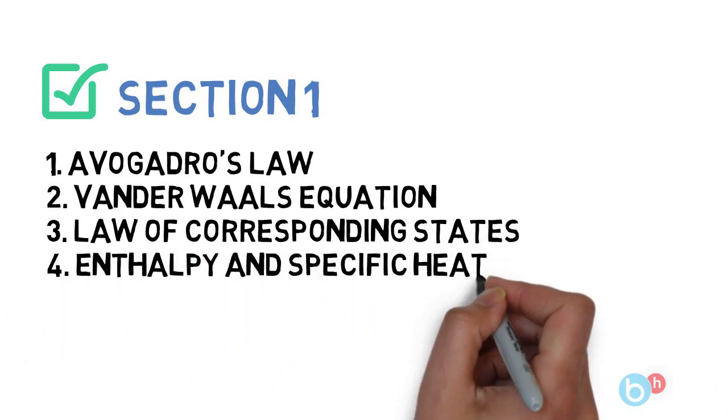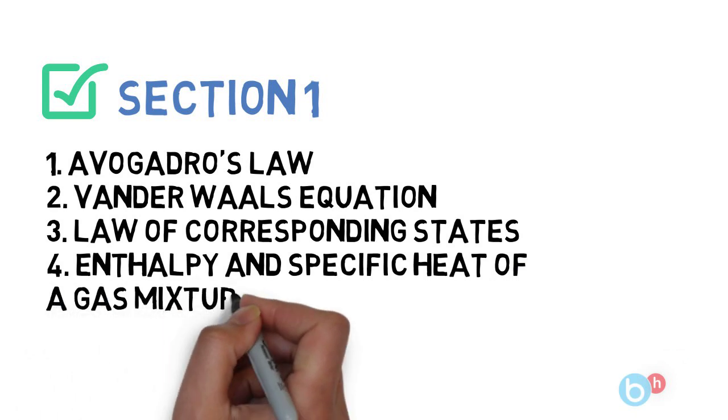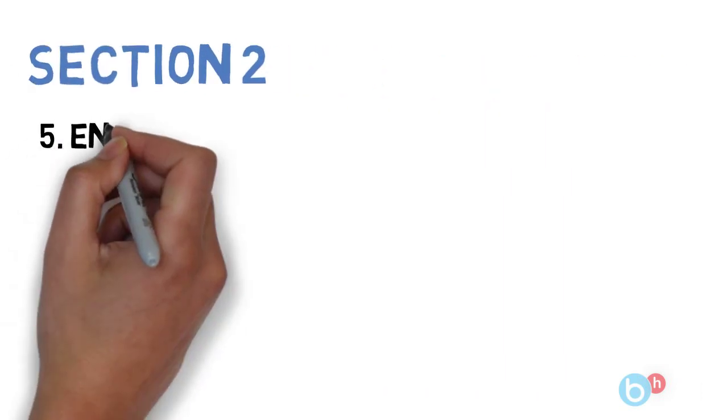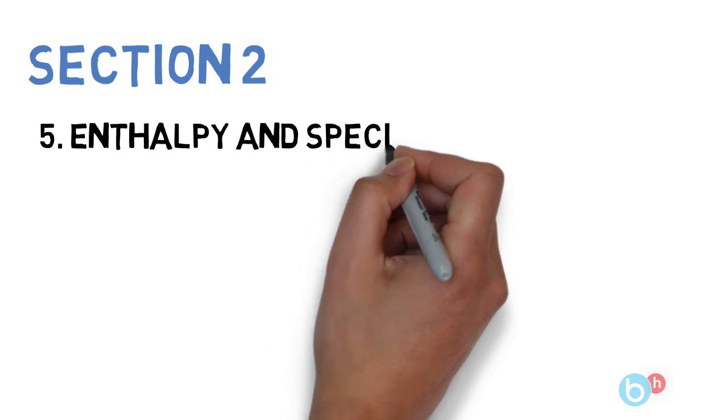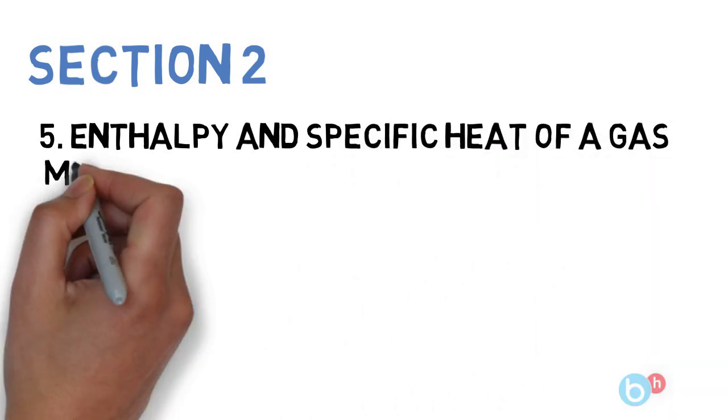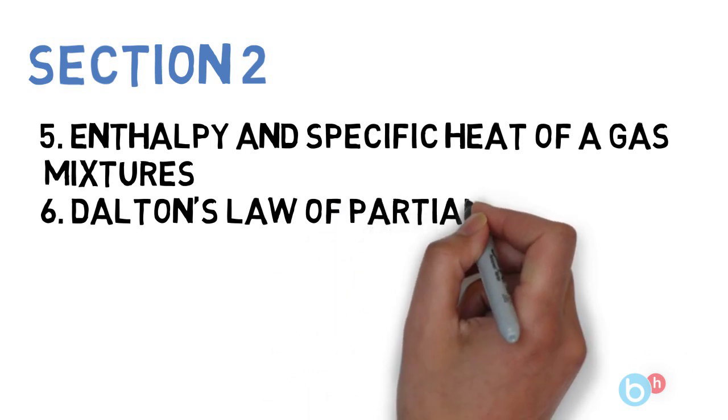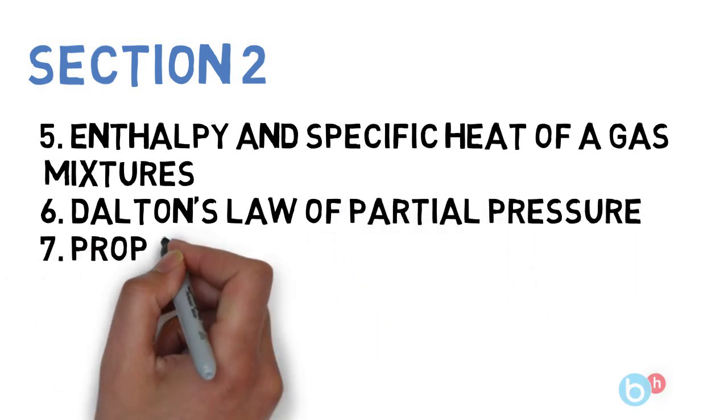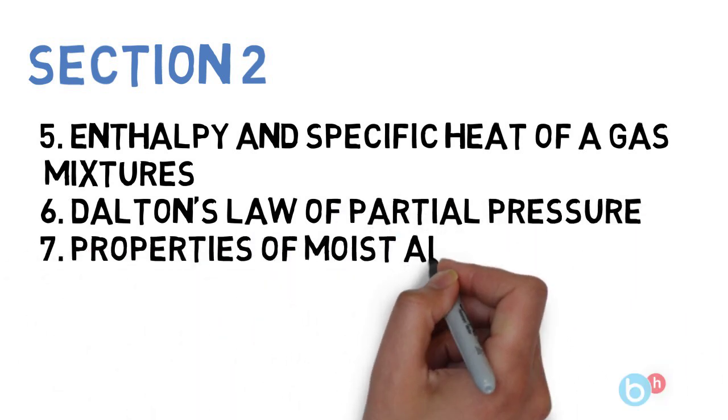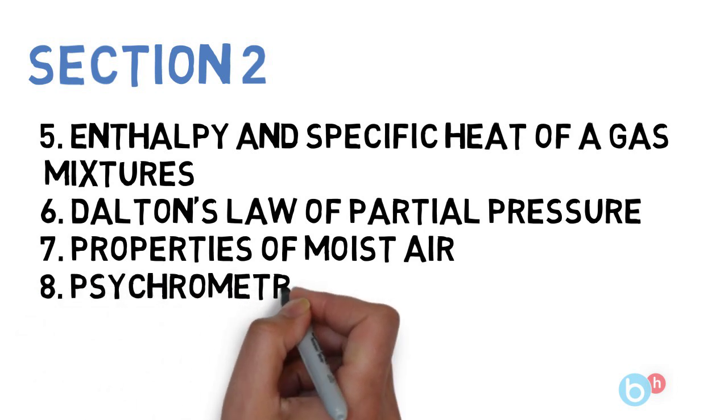For section 2 you have to prepare Dalton's Law of Partial Pressure, next is Properties of Moist Air, third is Psychrometric Chart, fourth is Classification and Nomenclature and Desirable Properties of Refrigerant. So these 4 questions you need to practice for section 2.